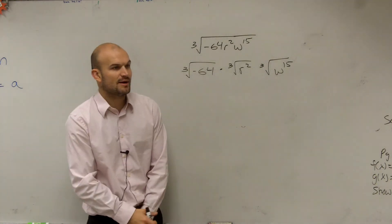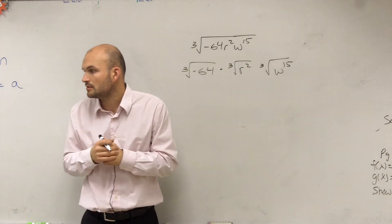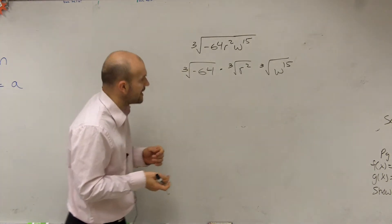So let's think about it. What number multiplied by itself three times gives you negative 64? Negative 4.